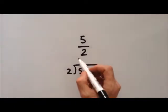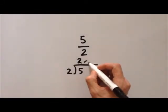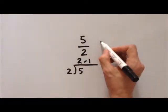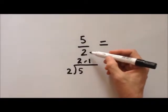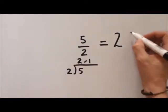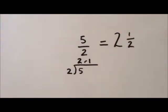Well 2 times 2 is 4, so that's 2 and there will be a remainder of 1. So 5 halves, remember the 2 is halves, equals 2 wholes and 1 half. 2 whole pizzas and a half of a pizza.